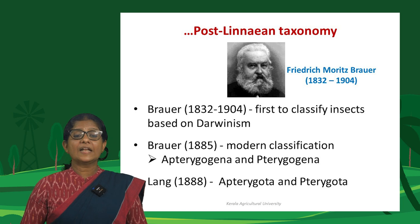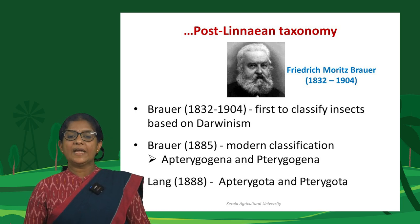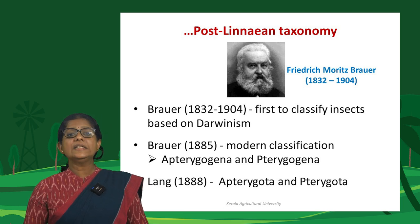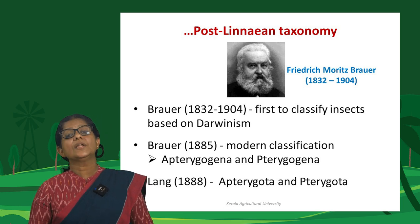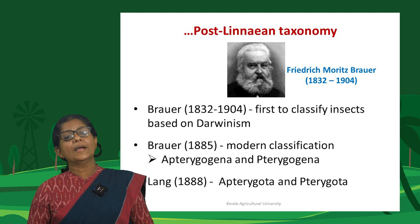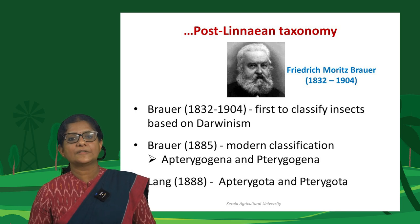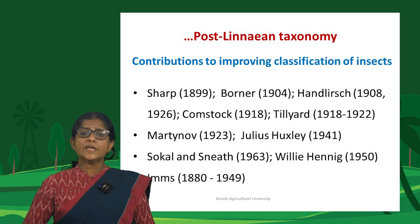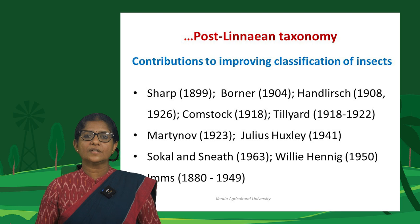Brauer classified insects into two groups, Apterygogenea and Pterygogenea; these terms were later changed to Apterygota and Pterygota by Lange in 1888. During this period, contributions to improving insect classification were made by several workers including Sharp, Bonner, Handlirsch, Comstock, Tillyard, Martynov, Julius Huxley, Sokal and Sneath, Willi Hennig, and IMMS.